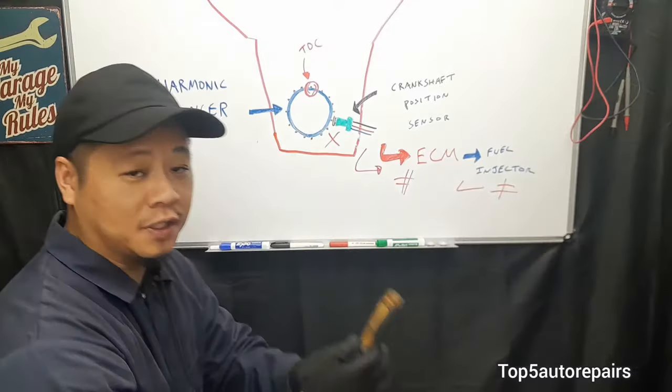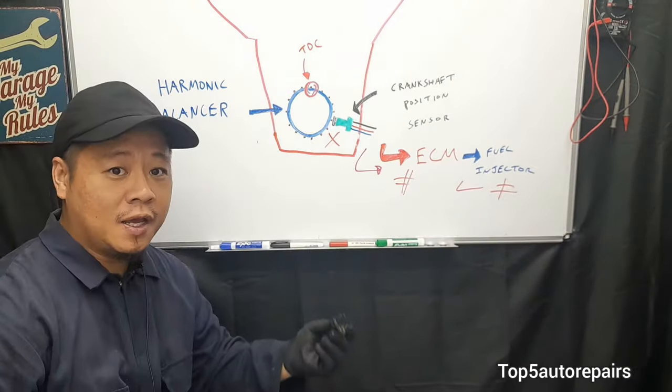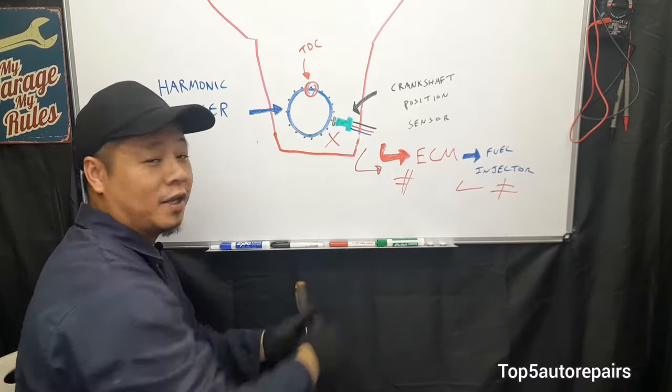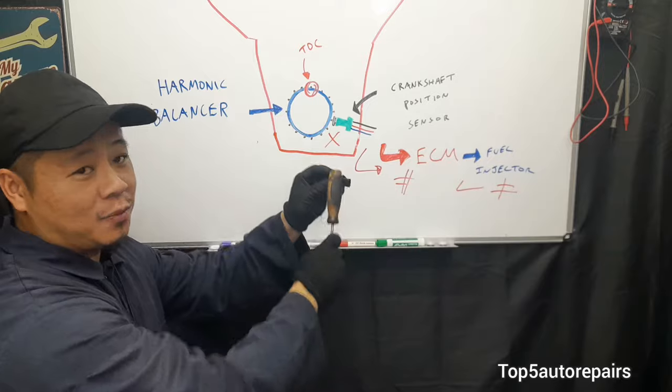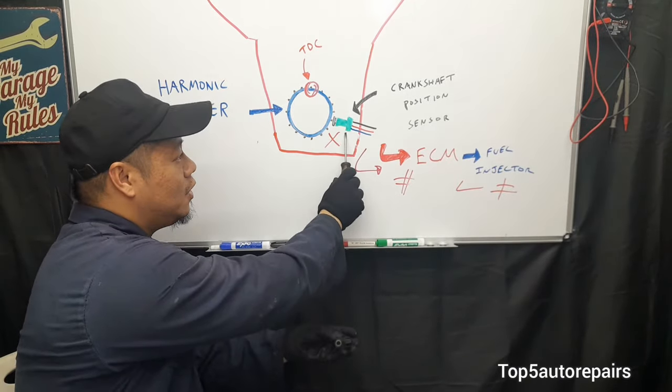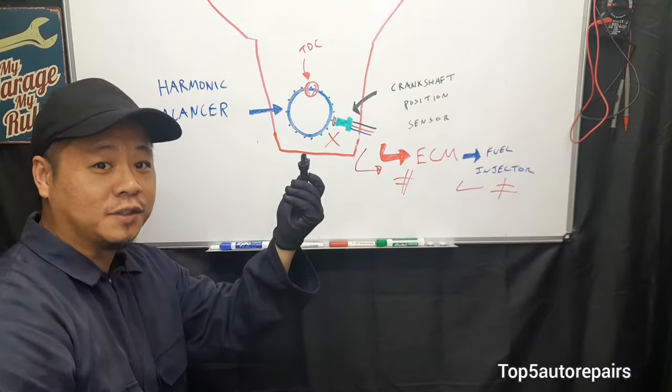You can also get yourself a screwdriver and tap on the crankshaft position sensor. If the engine stalls when you wiggle the wire or pull on it a little bit or tap on the sensor, two things can happen: either you've got a wire issue, or the crankshaft position sensor is actually failing.